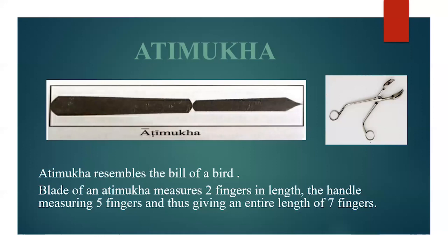Next is Atimukha. Atimukha resembles the bill or beak of a bird. The blade of an Atimukha Shastra measures 2 fingers in length and the handle measures 5 fingers, giving an entire length of 7 fingers.